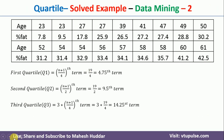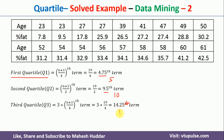Now we will find the quartile terms: Q1, Q2, and Q3. For Q1, the position is (N+1)/4 = 19/4 = 4.75, so we consider the 5th term. For Q2, the position is (N+1)/2 = 19/2 = 9.5, so we consider the 10th term. For Q3, the position is 3(N+1)/4 = 3×19/4 = 14.25, so we consider the 14th term.